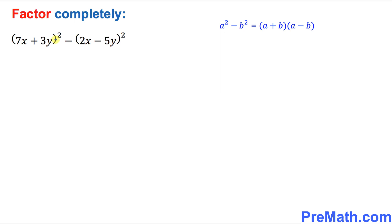This formula says a² minus b², the difference of two squares, is the product of sum and the difference. So let's work on this one.